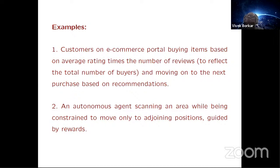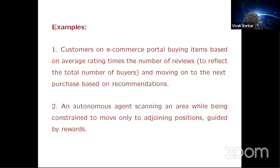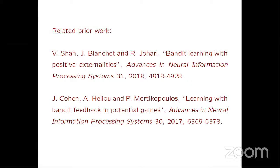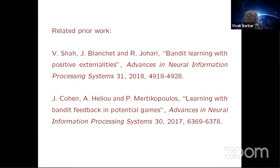The second example is an autonomous agent — a robot or UAV scanning an area. It naturally has a constraint: in a grid world, you can move from one spot to only one of its neighbors. That may be dictated by whatever performance measures you're looking for — radiation leaks or disaster scenarios. There are significant differences from the bandit literature, but all said and done, it is inspired by bandit literature.